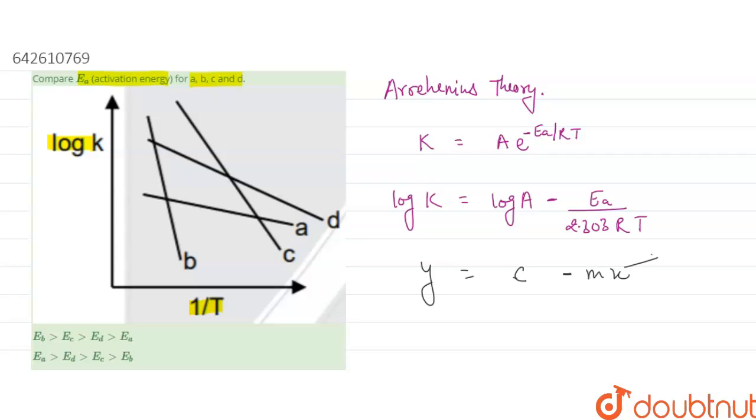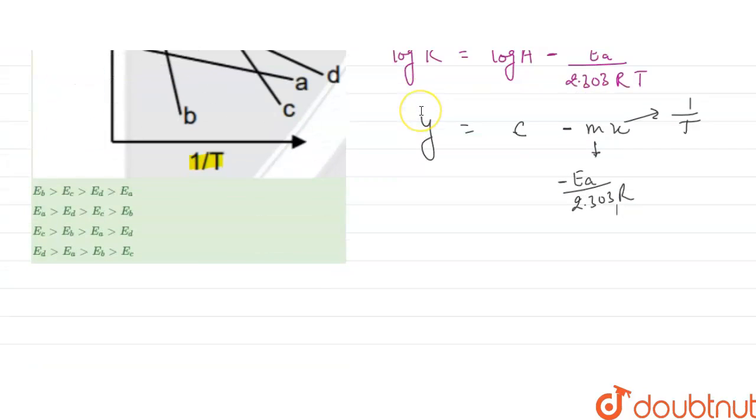X will be equals to 1 by T, and M here will be minus Ea upon 2.303R. So the slope will be equal to slope will be minus Ea upon 2.303R.